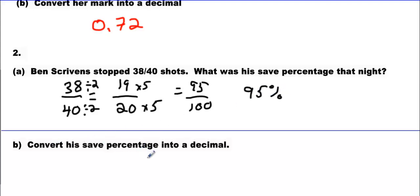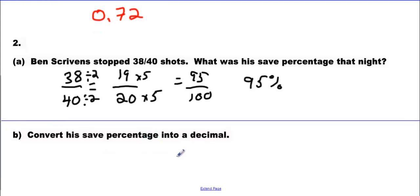Convert his save percentage into a decimal, which is the way hockey statisticians write percentages of goaltender saves. They write them as decimals. That's going to be decimal 0.95. Hey, did you know if I add a zero, it's still the same number. I can add as many as I want. It doesn't change my answer. But we don't need to. We just write decimal 0.95.